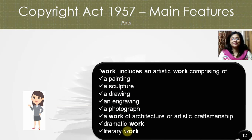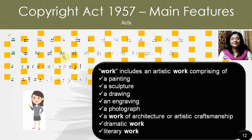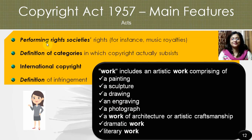The Act also covers dramatic work, literary work including computer programs, tables, etc. In short, the Copyright Act of 1957 gave rights to performing rights societies — for instance, music royalties. It gave definition to different categories in which copyright actually subsets, looked into international copyright, and gave definition to infringement of copyright.